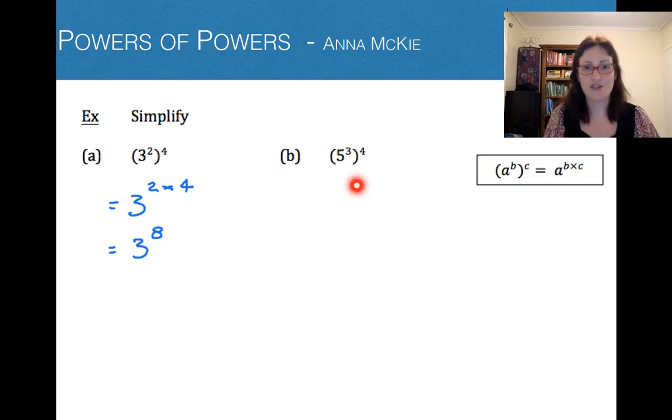Same process here using the rule: same base, multiply the powers. So we're going to take 5 to the power of 3 times by 4, and then we work out that multiplication. 3 times by 4 is 12, so we leave it as 5 to the power of 12. No need to get your calculator out.